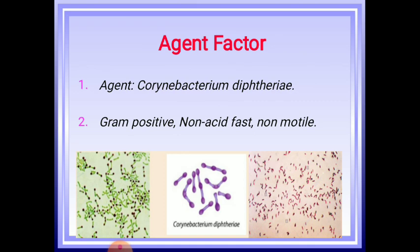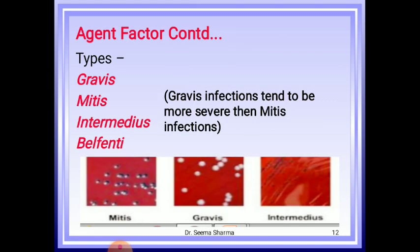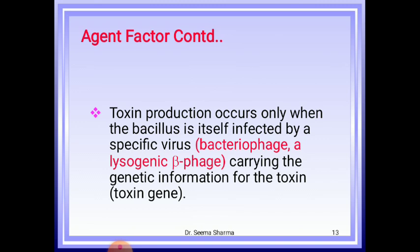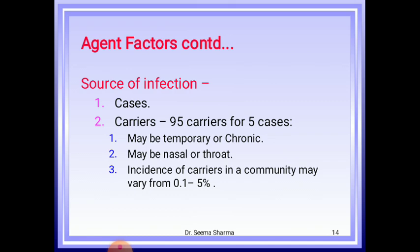Now the epidemiology — agent factor. The agent is Corynebacterium diphtheriae. It is gram-positive, non-acid-fast, non-motile bacteria. Types are Gravis, Mitis, Intermedius, or Belfantii. Gravis infections tend to be more severe than Mitis infections. Toxin production occurs only when the bacillus is itself infected by a specific bacteriophage — lysogenic beta phage — carrying the genetic information for toxin, also known as the toxin gene. Cases and carriers are the source of infection, with up to 95 carriers for 5 cases. Carriers may be temporary or chronic, nasal or throat, and incidence of carrier in a community may vary from 0.1 to 5%.